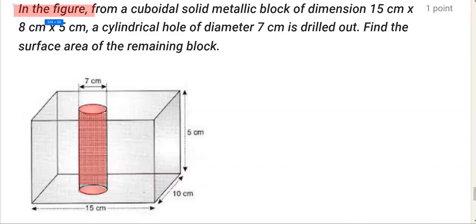We have a question from surface area and volume. There is a cuboidal metallic block whose dimensions are given: length 15 centimeters, breadth 10 centimeters, and height 5 centimeters. A cylindrical hole is drilled out of it.